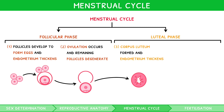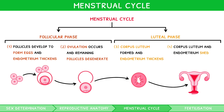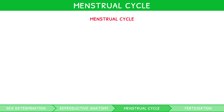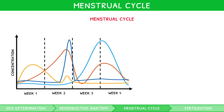At the end of the luteal phase, the corpus luteum and endometrium are broken down and shed, known as menstruation, or more colloquially, a period. Commonly, the menstrual cycle is represented using a graph, with several lines to visualise the relevant hormones and their peaks at the different stages of the cycle. You must feel comfortable identifying each hormone and describing its role.